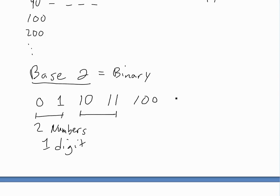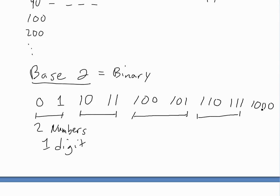We go directly to 100 here. Then 101, then we increase the center one to get 110, and then 111. Then we go to the next one: 1000. Then we increase again — 1001 — and we keep doing this, incrementing each combination, until we get to 10000.